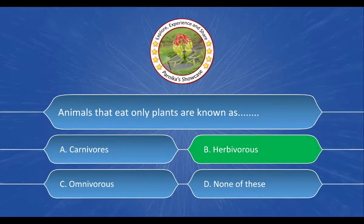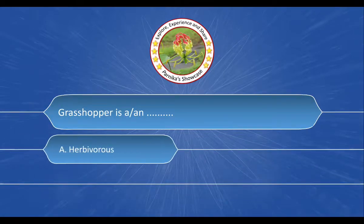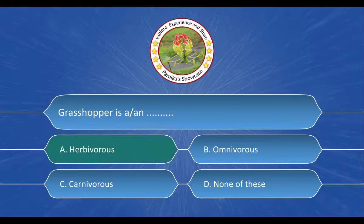Next question: Grasshopper is dash dash. The options are A. Herbivorous, B. Omnivorous, C. Carnivorous, D. None of these. And the correct answer is option A. Herbivorous.